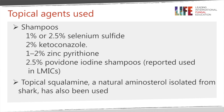Topical agents that can be used include shampoos of selenium sulfide at different concentrations, ketoconazole 1–2%, zinc pyrithione, and povidone-iodine shampoos at about 2.5%, the latter used in low- and middle-income countries. There is also a topical agent called squalamine, a natural aminosterol isolated from sharks, that has also been used.